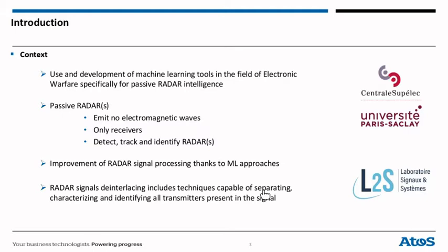But what is passive radar? It's a detection device that doesn't emit electromagnetic waves. It's only a receiver that can detect, track and identify radars. Radar signal interlacing includes techniques capable of separating, characterizing and identifying all transmitters present in the signal.